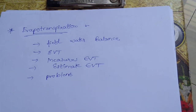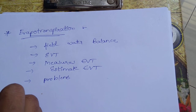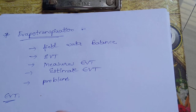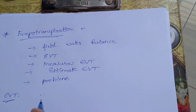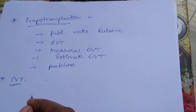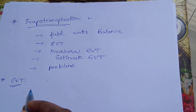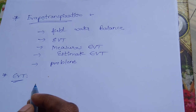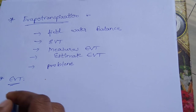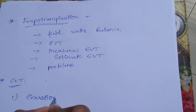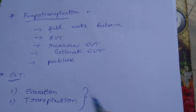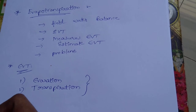First of all, you have to learn about what is evapotranspiration. Whenever there is a water body, there is a tendency to evaporate. Water on plant surfaces, water on soil, or water in a lake or reservoir will definitely evaporate. Evapotranspiration has two parts: the first one is evaporation and the second one is transpiration. The combination of these two is known as evapotranspiration.